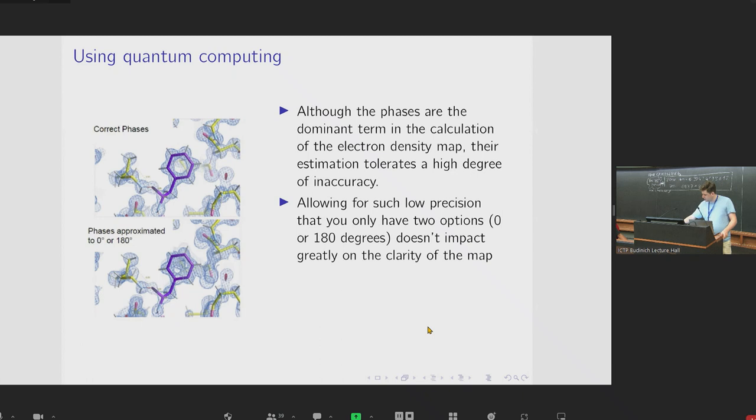So the top one shows a map produced by the correct phases for some molecule, where the blue regions in that top figure are the electron density. And the bottom figure shows the same structure, but with the phases fixed to the nearest of two allowed values. And as you can see, the shape of the electron density regions are changed somewhat. But overall, it convincingly shows the same structure.